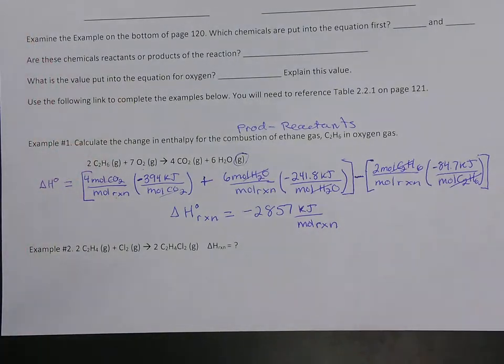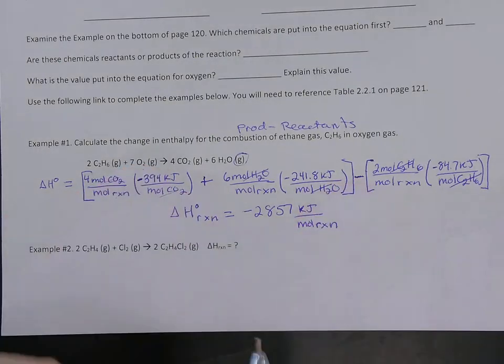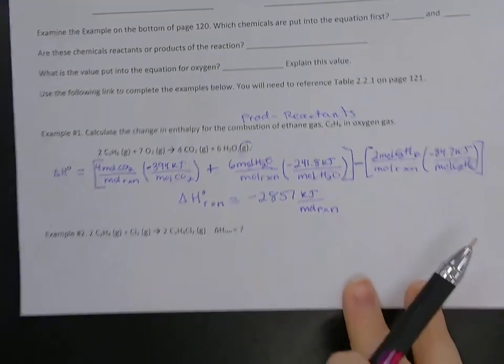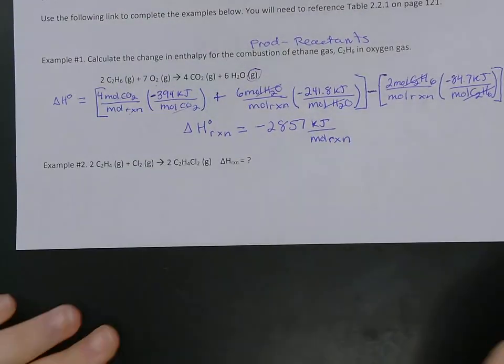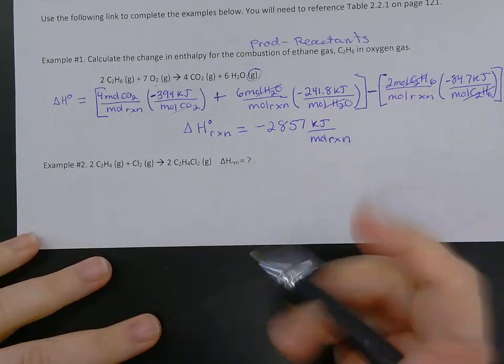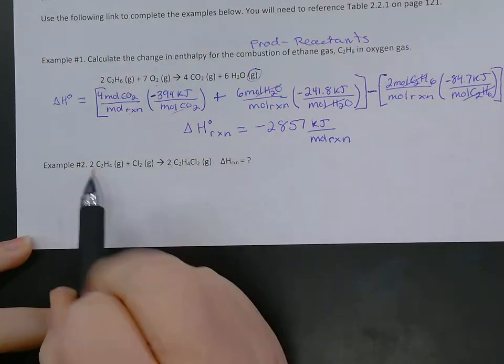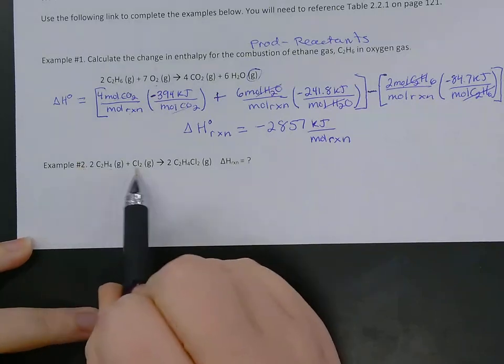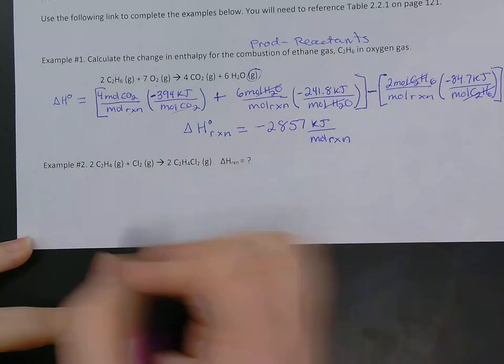To add and subtract, we need the same units on chemicals. All right. So that's our process. The sum of the products minus the sum of the reactants. So we're going to try another one. Take a look at it, and then you'll have some homework or some practice to do in class tomorrow. So here's our reaction. We've got two C2H4 gas plus chlorine gas giving us two C2H4Cl2 gas.